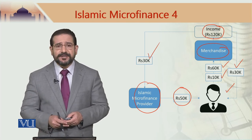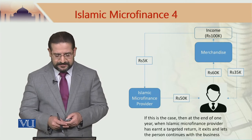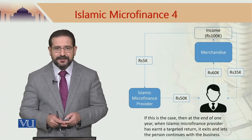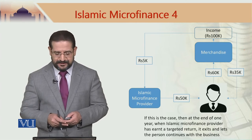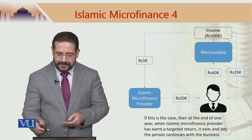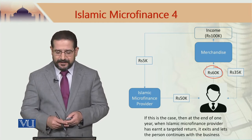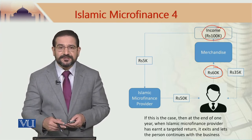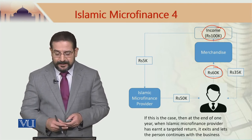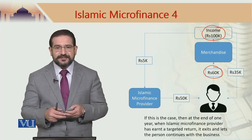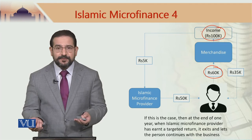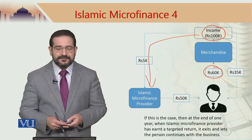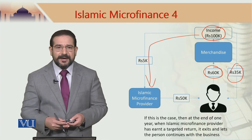This is an exaggerated example. In real practice, the share of profit going to the Islamic microfinance provider is far less than 50%. In a more realistic example where 60,000 is used as Musharakah capital, if the revenue is 100,000 after one month and costs are 60,000, then the profit is 40,000. The profit distribution ratio could be such that 5,000 goes to the Islamic microfinance provider and 35,000 is kept by the recipient.